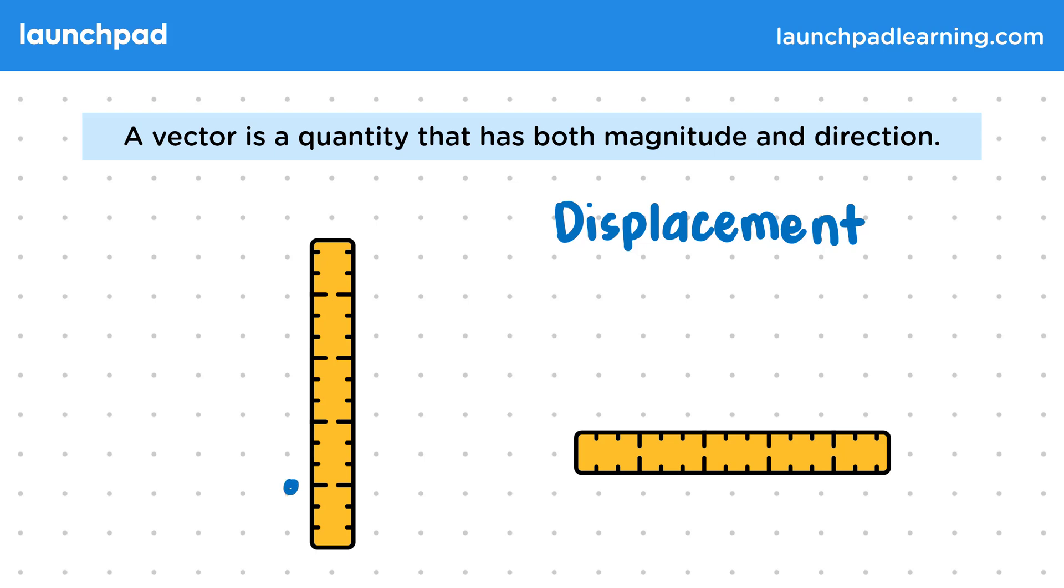So for the vertical ruler, we would measure a displacement as 3cm up, instead of just 3cm. Then for the other ruler, we could measure displacement as 3cm to the right.